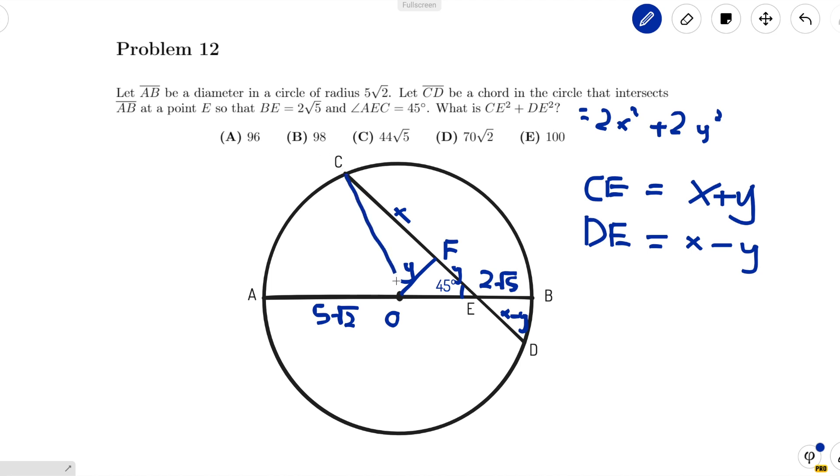If we connect CO over here, CFO is a right angle. So that means CFO is a right triangle. And CO is the square root of X squared plus Y squared. And we know what CO is, because we know the radius is 5 root 2. So that means X squared plus Y squared equals 50, because that's 5 root 2 squared.